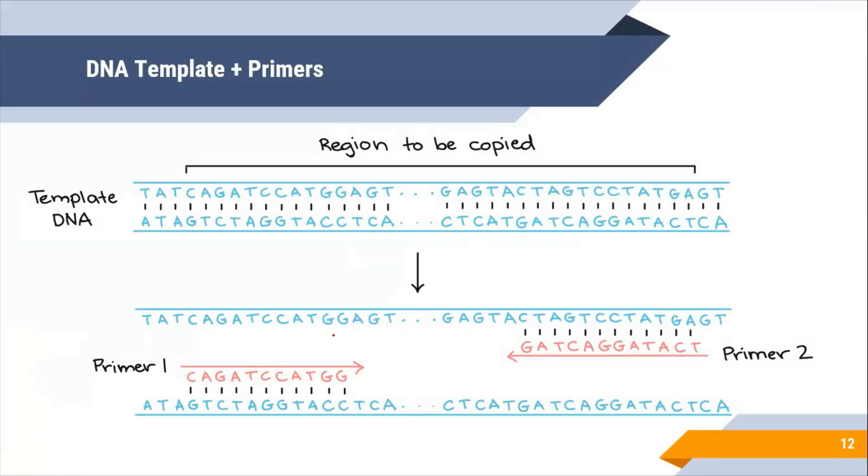These primers provide us 5' to 3' primers because elongation always takes place in 5' to 3' direction. If we don't have 3' OH ends we can't amplify or polymerize. Amplification is always possible in 5' to 3' direction and primers provide us 3' OH group on which further elongation takes place.